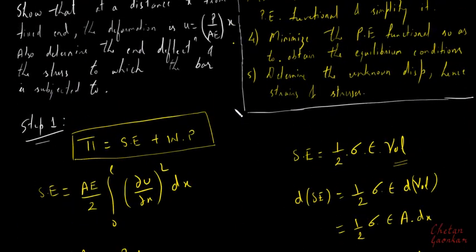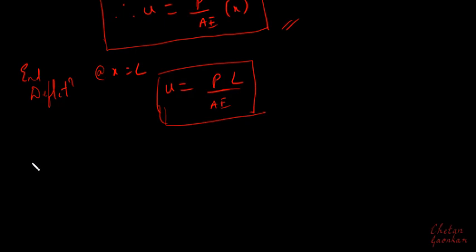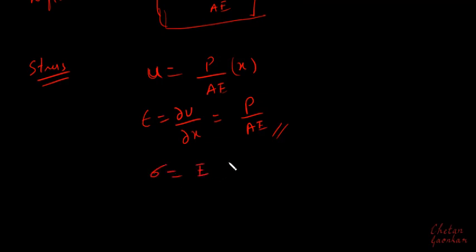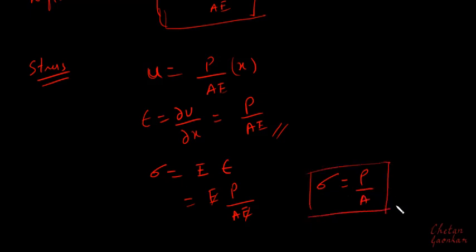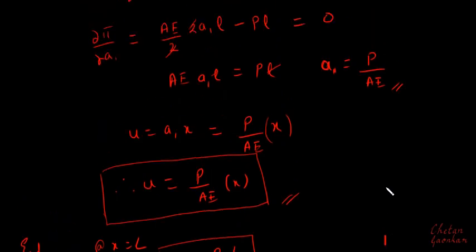Finally, we determine the stress. From the general displacement expression u = Px/(AE), the strain ε = ∂u/∂x = P/(AE). Using Hooke's law, stress σ = E·ε = E · P/(AE) = P/A. This is again the familiar stress equation from Mechanics of Solids. This is how we solve the problem of a bar subjected to a point load using the Rayleigh Ritz method.